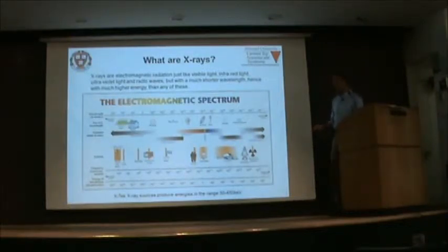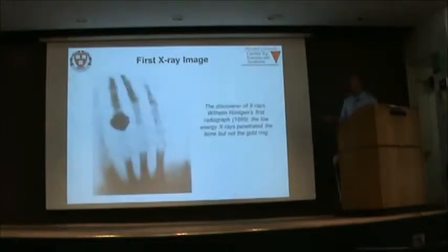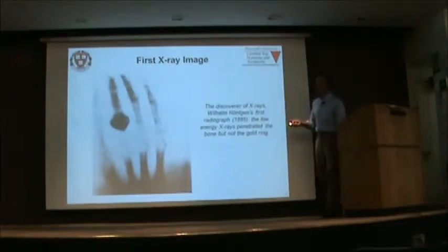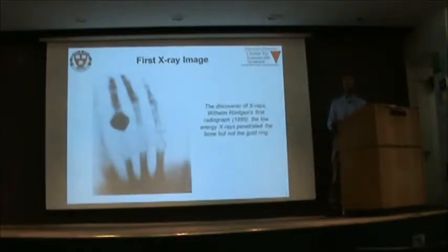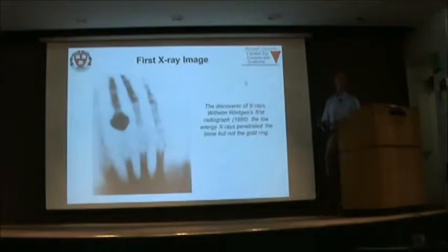On our system we can produce energies in the range of 30 to 450 kilo-electron-volts photon energies. The first X-ray image was taken by Wilhelm Röntgen back in 1895 — a very low energy X-ray penetrating bone. It's claimed this is his wife's hand, and you can see the ring because the X-rays couldn't penetrate the gold ring — it's a much denser material. X-rays cannot penetrate through everything; certain materials are more transparent to X-rays than others.